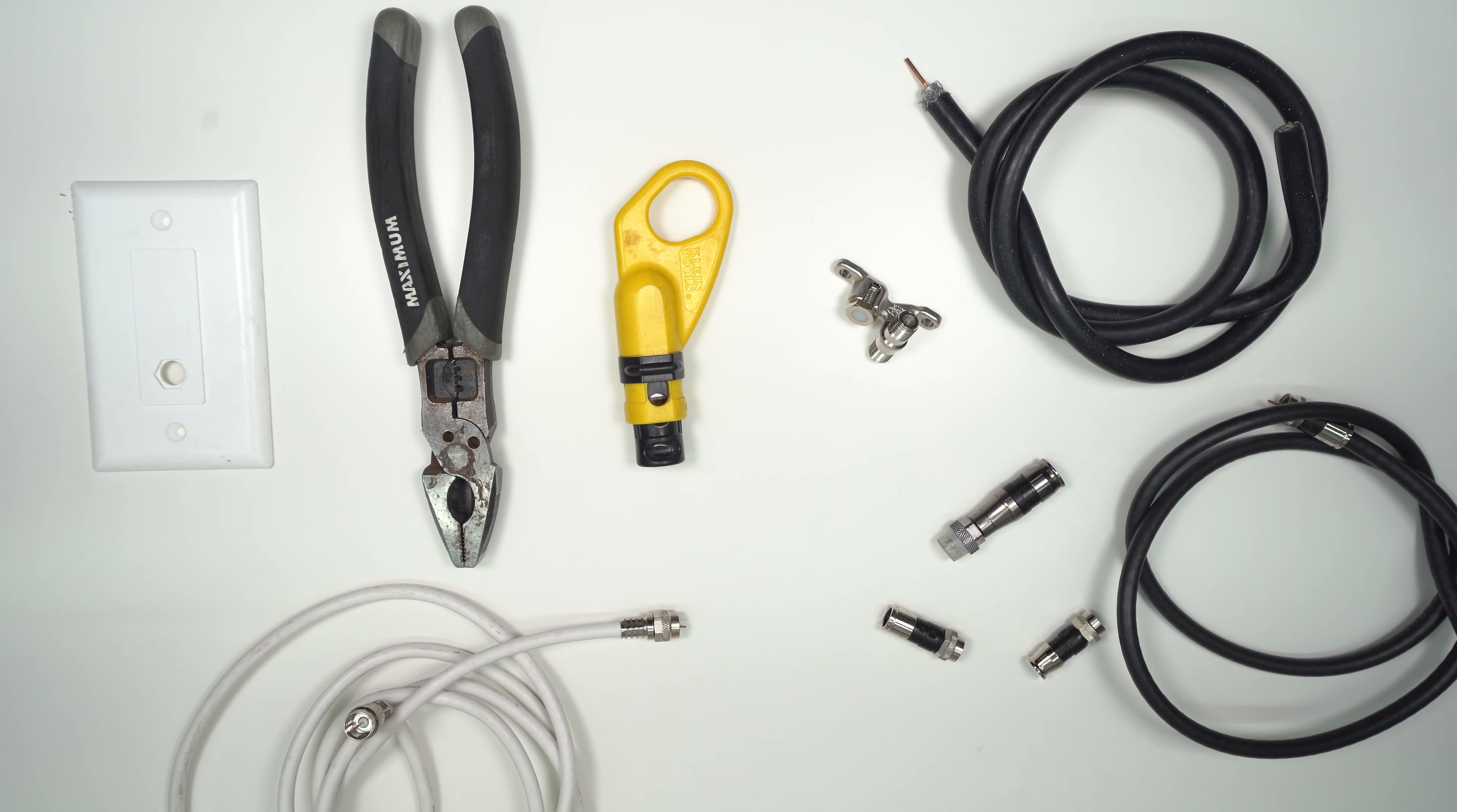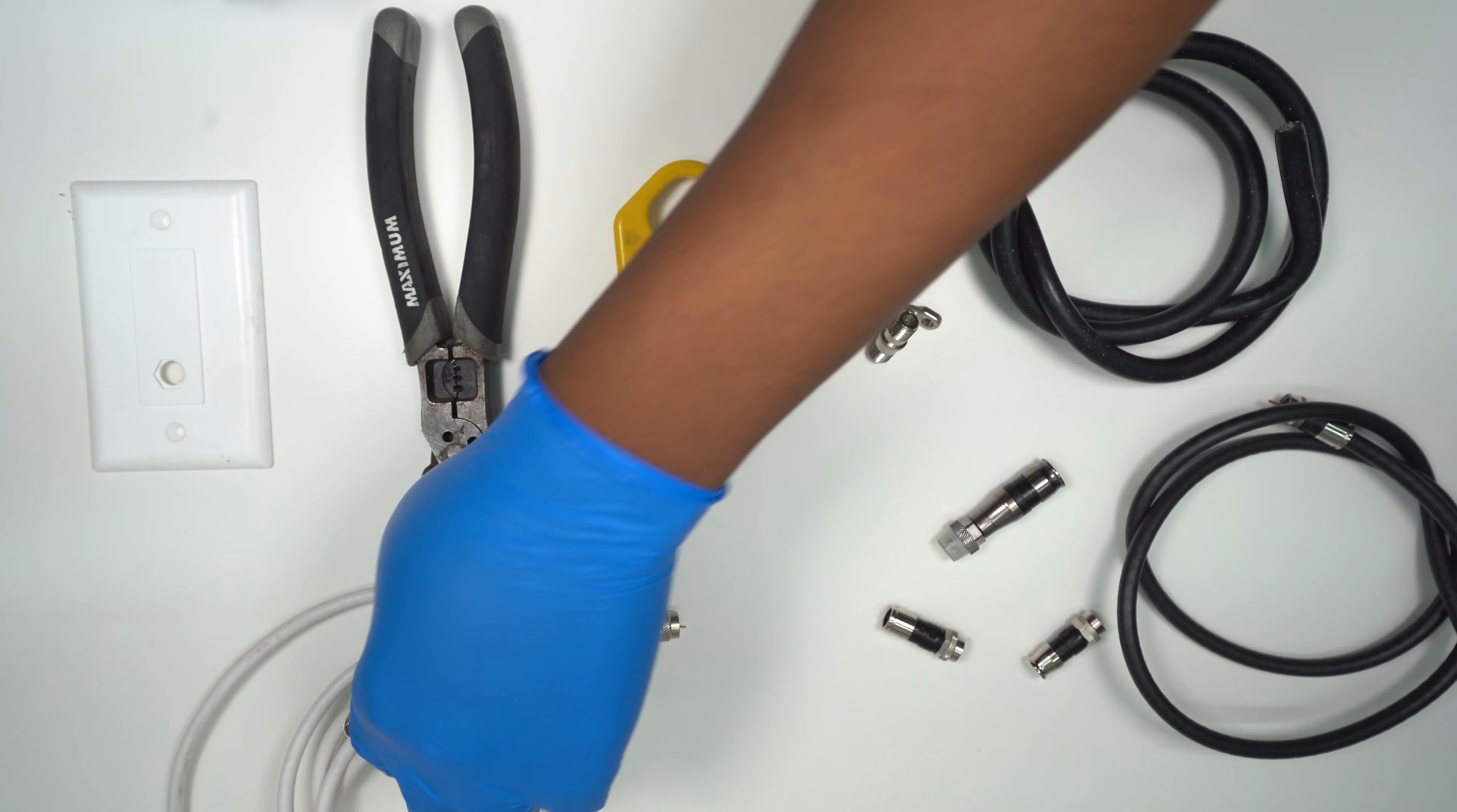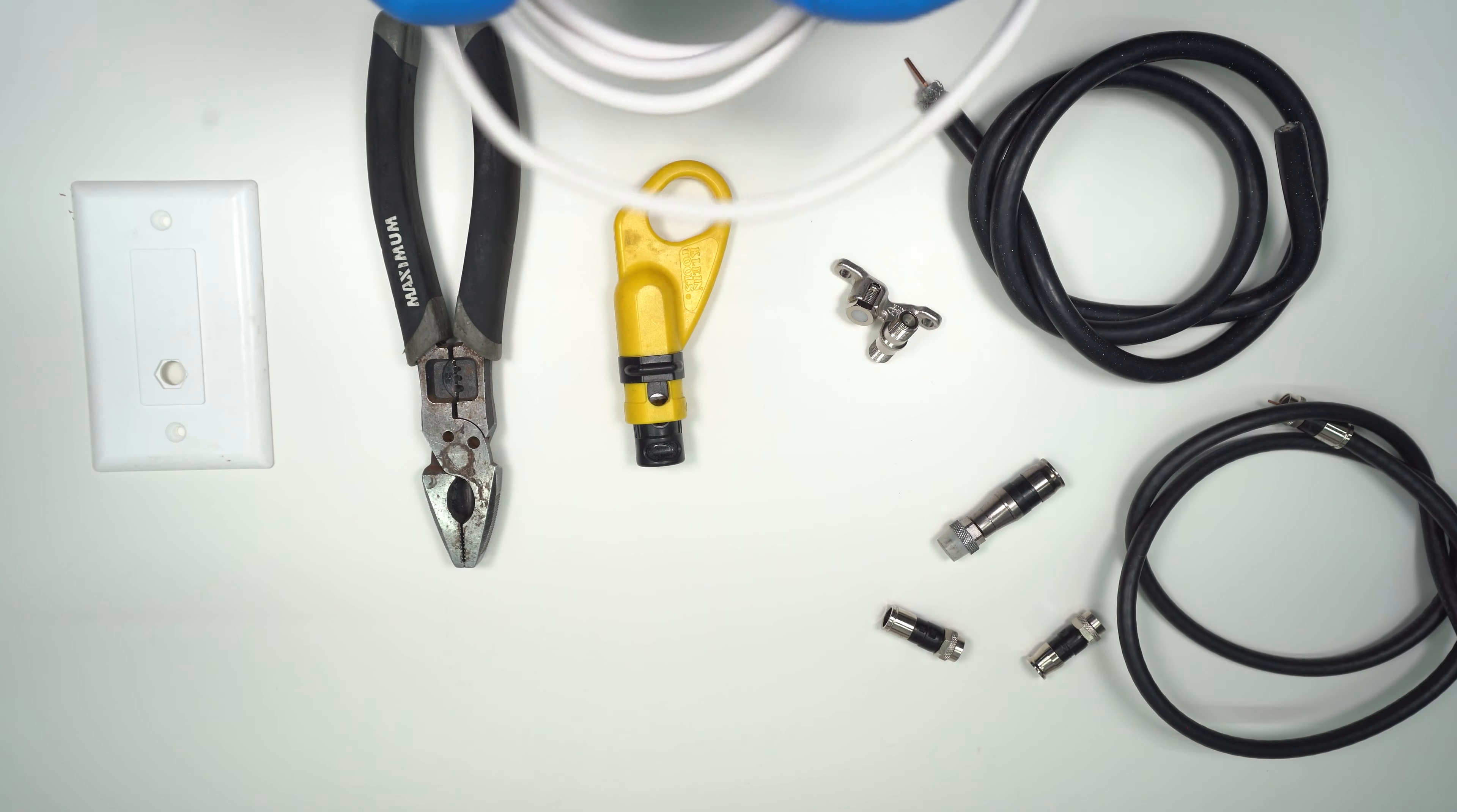With coax, the thicker the gauge the better reception you get from the cable. So the 11 is by far the best cable to have, but that's definitely not what runs to your house. The 56 would be what runs through your house. Sometimes when you're in a worse area, the 59 is all you can get unfortunately.